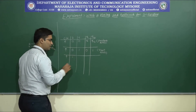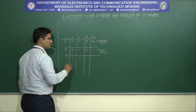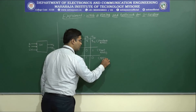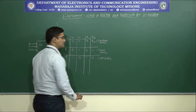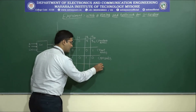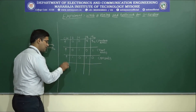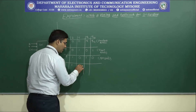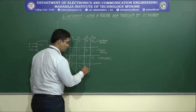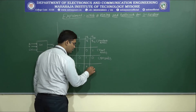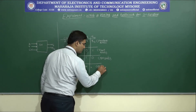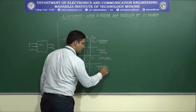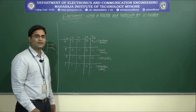When S=1 and R=0, Q is one and Q bar is zero — the output is in the set state. The last condition: when S=1 and R=1 at the positive edge of the clock, the output would be in the forbidden or undefined state.